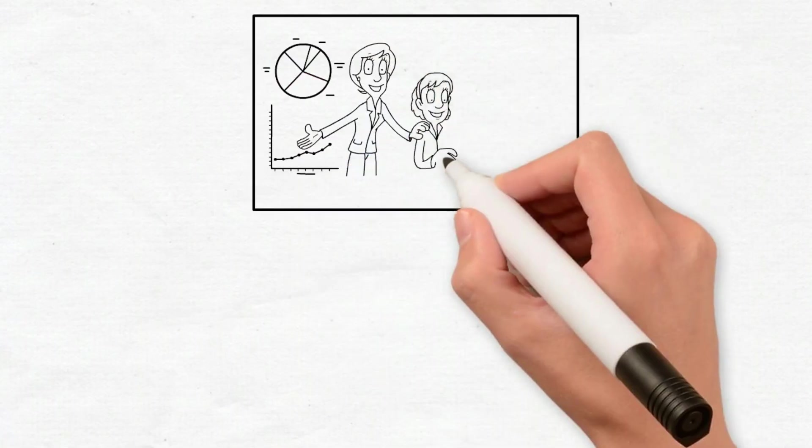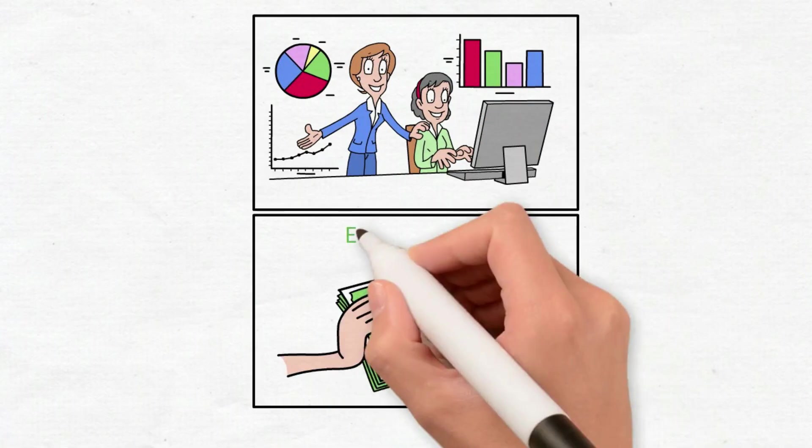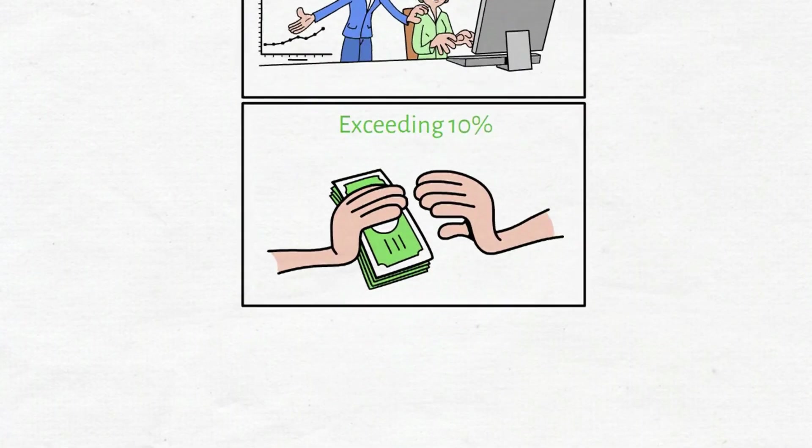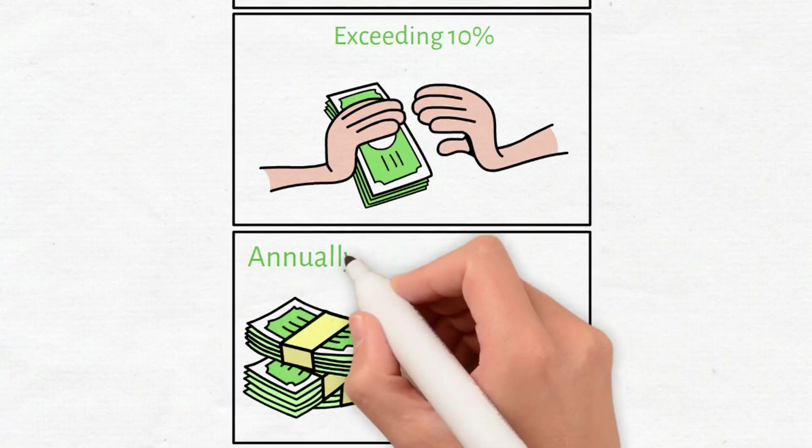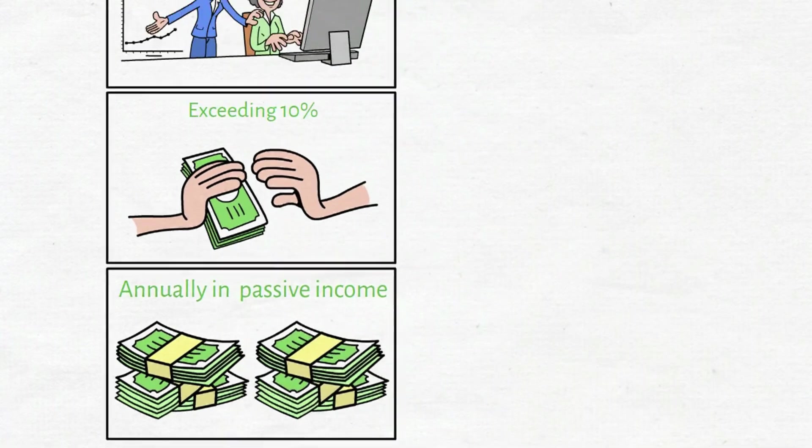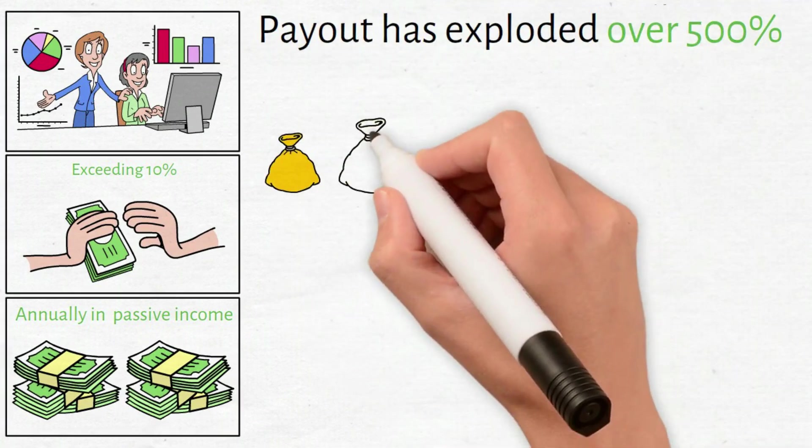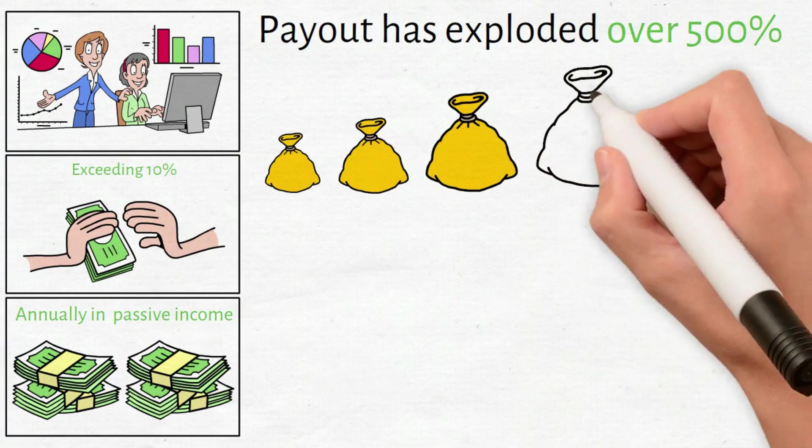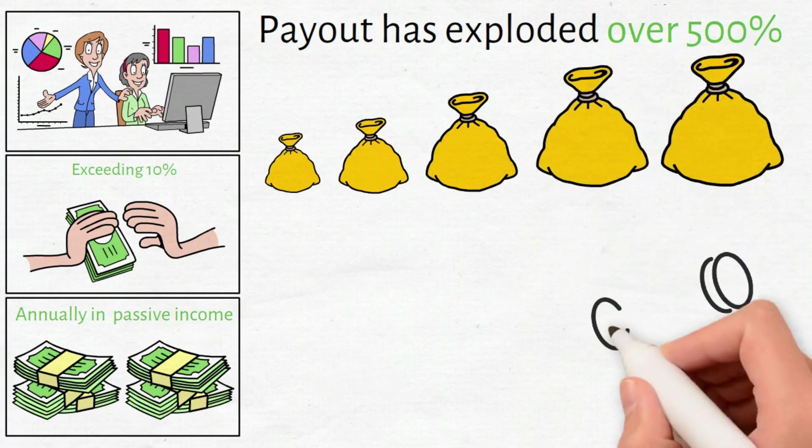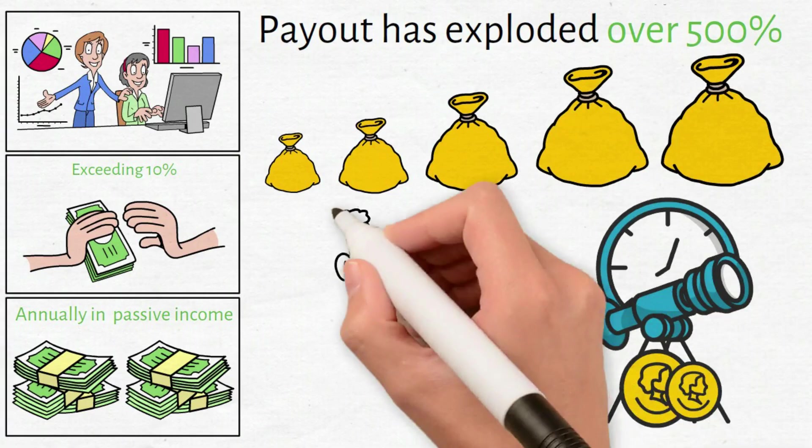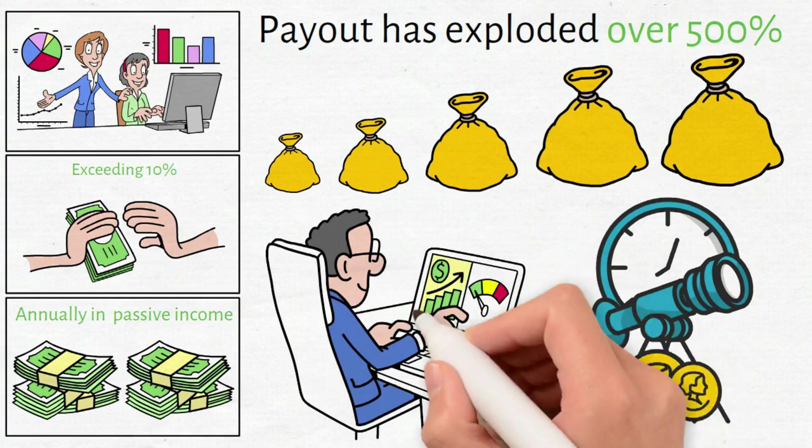Long-term SCHD holders who bought shares early now enjoy yields on costs exceeding 10%. Their original investment generates double-digit returns annually in pure passive income. Forever. The payout has exploded over 500% since inception with consistent double-digit compound annual growth. This isn't theoretical projection. This actually happened to real investors who simply bought and held.